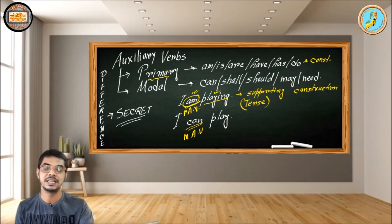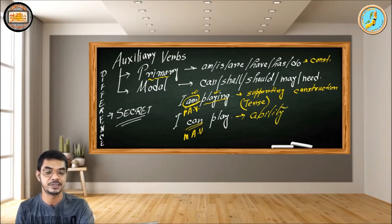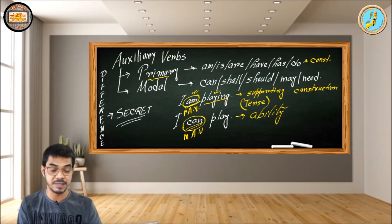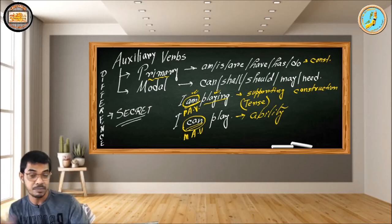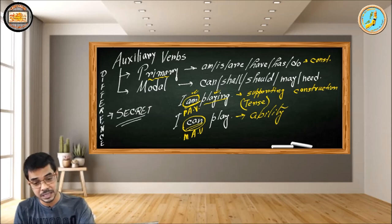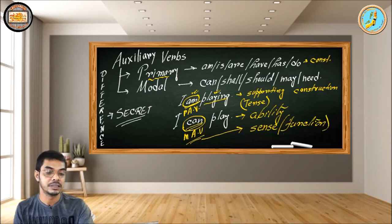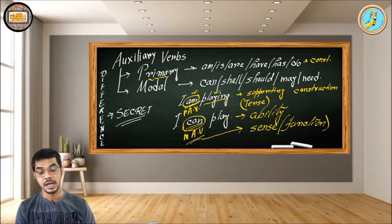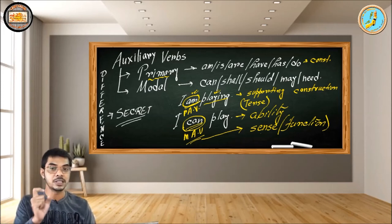On the other hand, when I shift to 'I can play,' what does it mean? It simply means ability. 'Can' means ability — 'I can play' means I have the ability to play. Or if you transform it into 'Can I play?' it means you are asking for permission. So whenever we have a modal auxiliary, it poses a sense — it is concerned with a function. And that's the difference. In primary auxiliary, you won't get any sense; it's supporting material for construction of the sentence. But in modal auxiliary, you have a particular sense of the modal itself.